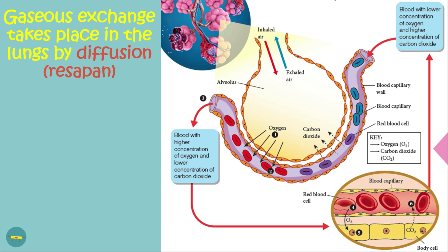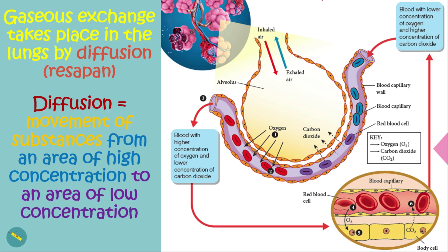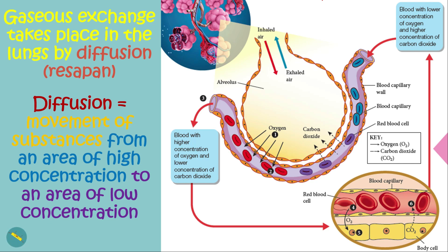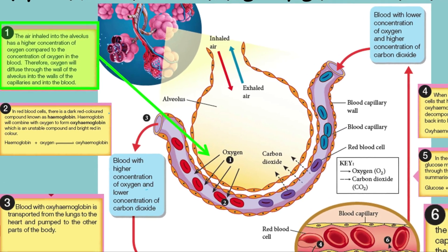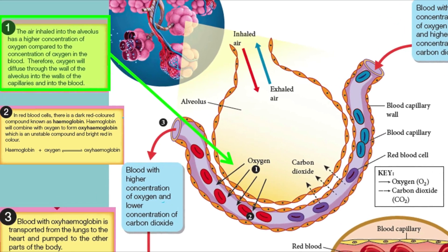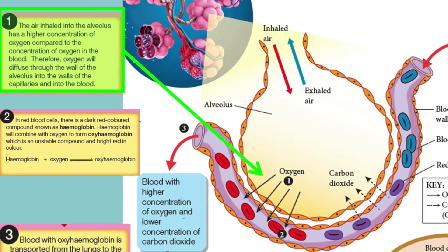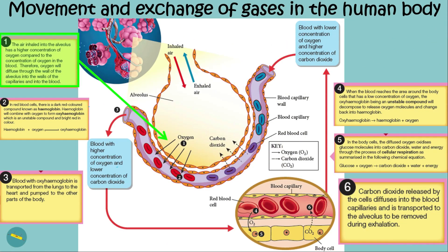Gaseous exchange takes place in the lungs by diffusion. Diffusion is the movement of substances from an area of high concentration to an area of low concentration. The air inhaled into the alveoli has a higher concentration of oxygen compared to the concentration of oxygen in the blood. Therefore, oxygen will diffuse through the wall of the alveoli into the wall of the capillaries and into the blood.